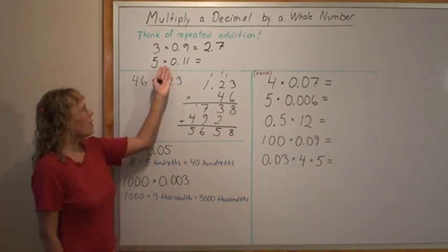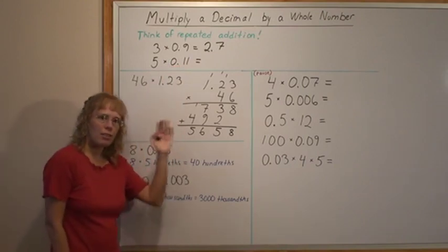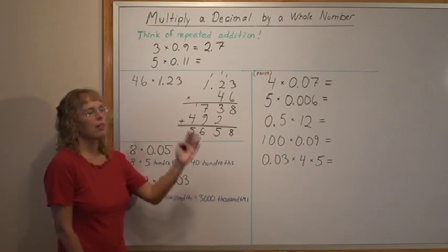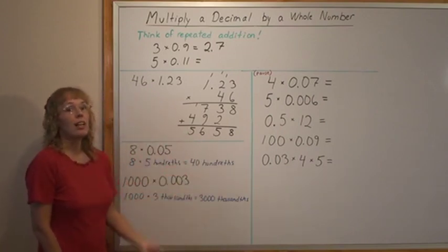My other example, 5 times 11 hundredths. It is like adding 11 hundredths. 11 hundredths plus another 11 hundredths plus another 11, another 11, another 11. You get 55 hundredths.